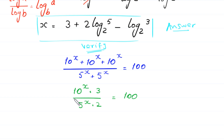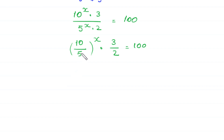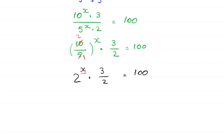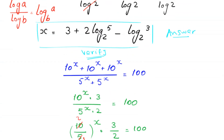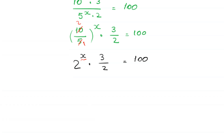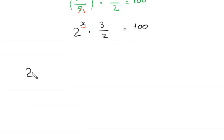This 10 to the power x over 5 to the power x can be written as (10 over 5) to the power x, times 3 over 2, equals 100. Since 10/5 = 2, the left side becomes 2 to the power x times 3 over 2, equal to 100. Now, in place of x, we put the value 3 plus 2 times log base 2 of 5 minus log base 2 of 3, times 3 over 2, equals 100.